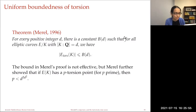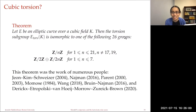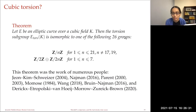One can make more of these ideas explicit. For cubic torsion: if I have an elliptic curve over a cubic field, the torsion subgroup is isomorphic to one of 26 groups, with 25 occurring infinitely often. This theorem was the work of many people: Jeon, Kim, Schweizer, Najman, Parent, Momose, Wang, Roy, and most recently Derickx, Etropolski, Van Hoeij, Morrow, and Zureick-Brown.